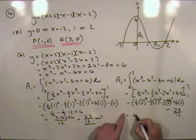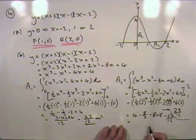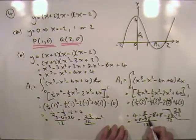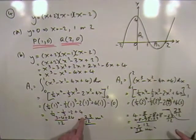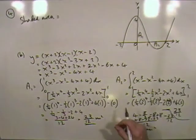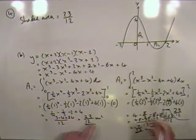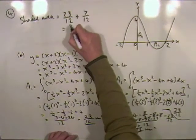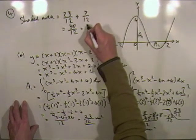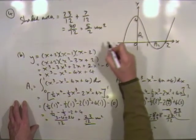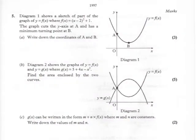For area two, substituting x = 2 gives 16/4 − 8/3 − 8 + 8, which works out to −7/12. So area one is 23/12 and area two is −7/12. The total shaded area equals 23/12 + 7/12 = 30/12, which cancels down to 5/2, or two and a half square units.